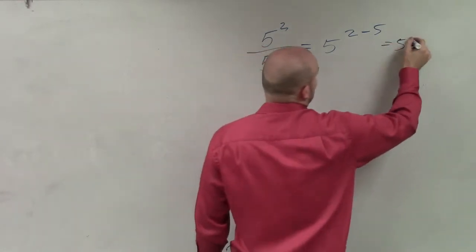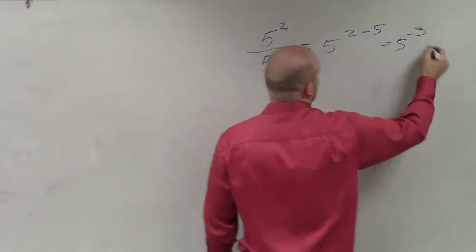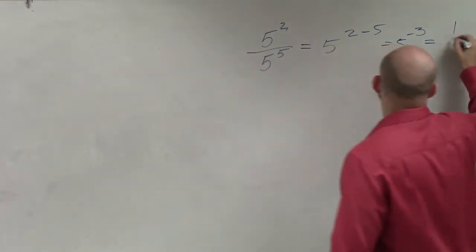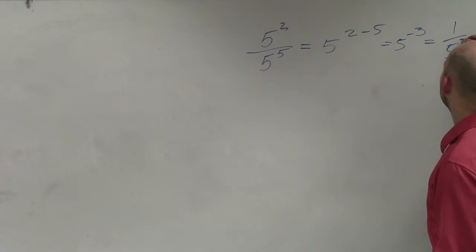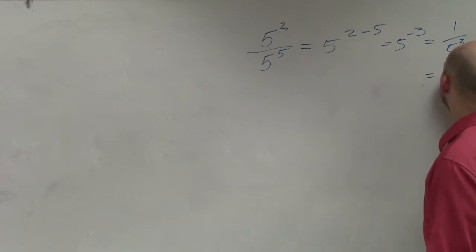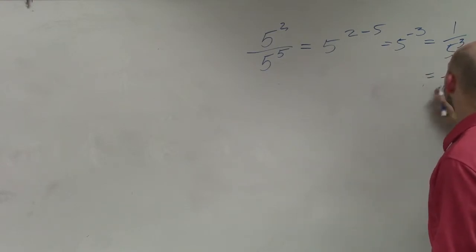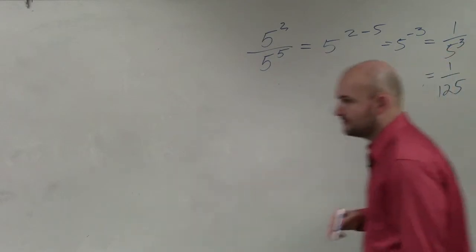So this equals 5 to the negative third, which equals 1 over 5 cubed, which is equal to 1 over 125.